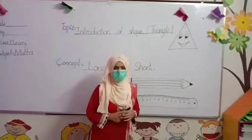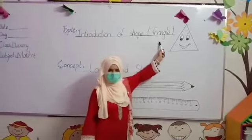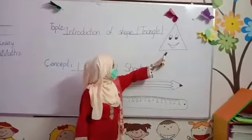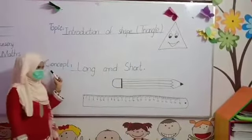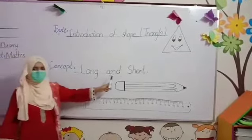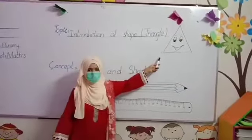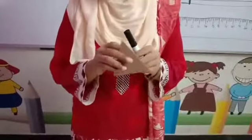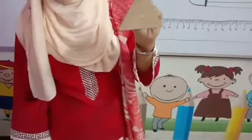Our second shape is triangle. Which shape is this? This is triangle. Our second concept is long and short. First I am giving you an example of triangle. Look at this shape. Which shape is this? This is triangle.